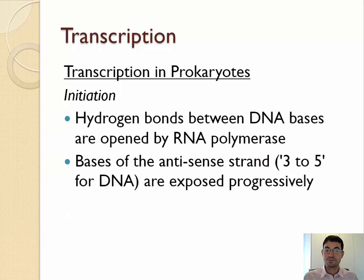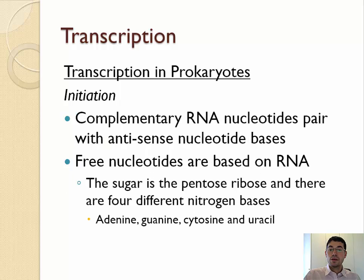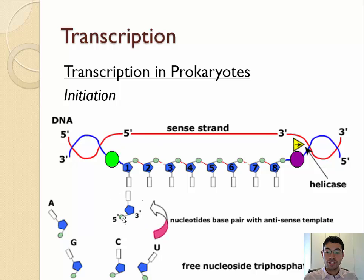During initiation, the RNA polymerase unwinds the DNA by breaking the hydrogen bonds between the two strands, attaching to the promoter region, and then starts to read the antisense strand. Complementary RNA nucleotides are going to pair with that open site of DNA, using the RNA nucleotides A, G, C, and U.